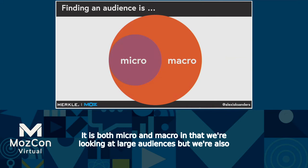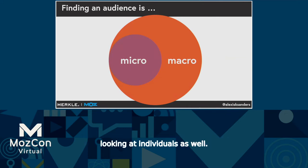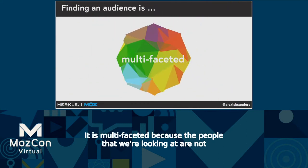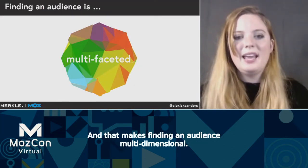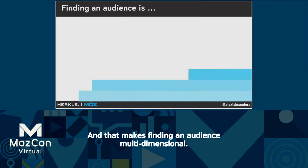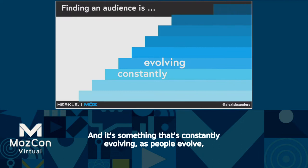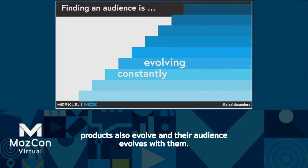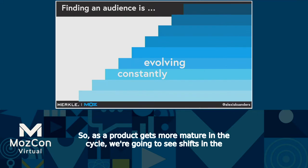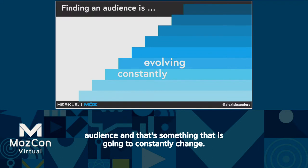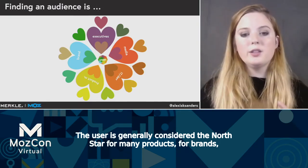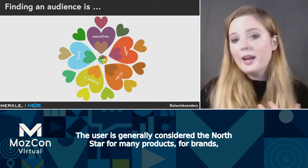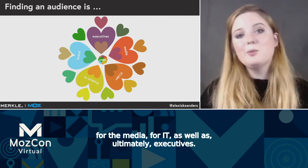It is both micro and macro in that we're looking at large audiences, but we're also looking at individuals as well. It is multifaceted because the people we're looking at are not just one-dimensional — they have lives, they have depth to them. And that makes finding an audience multidimensional. It's something that's constantly evolving. As people evolve, products also evolve and their audience evolves with them. The user is generally considered the North Star for many products, brands, the media, IT, as well as ultimately executives.